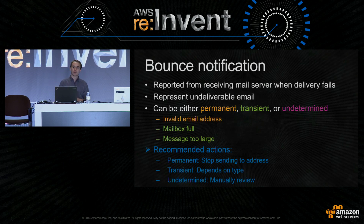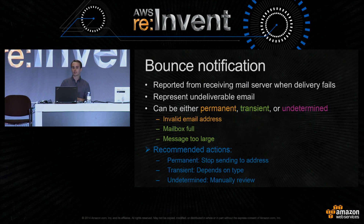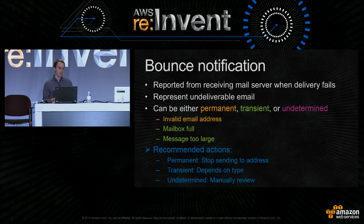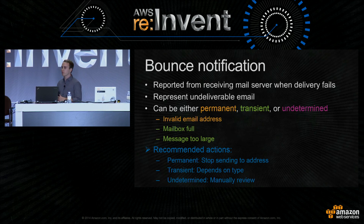Transient bounces represent failed delivery attempts to an email address which will likely be able to receive emails successfully in the future. For example, an email that fails due to a full recipient inbox has a high chance of succeeding if retried. Or if you receive a bounce due to a message being too large, you may be able to reduce the message size before sending again. Undetermined bounces represent bounces that SES was unable to classify. This can happen if SES receives a nonstandard bounce from an ISP and is unable to parse and classify it. In summary, we recommend that you stop sending to addresses that generate permanent bounces, handle transient bounces on a case-by-case basis, and manually review undetermined bounces.